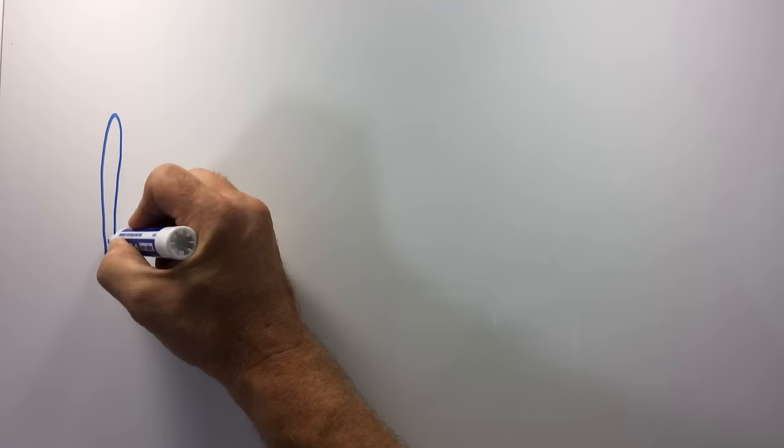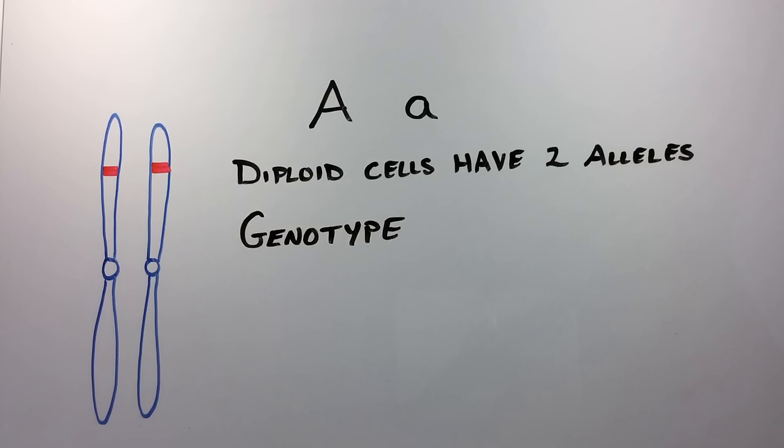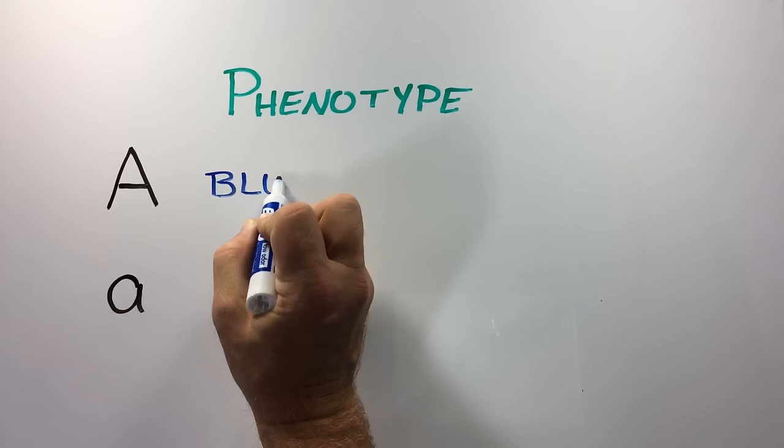Let's consider an example in which there are two alleles designated as big A and little a for a particular gene. Many cells are diploid and contain two copies of an allele. The combination of alleles in an individual is called the genotype. If the alleles are the same, the genotype is called homozygous. If the alleles are different, the genotype is called heterozygous.